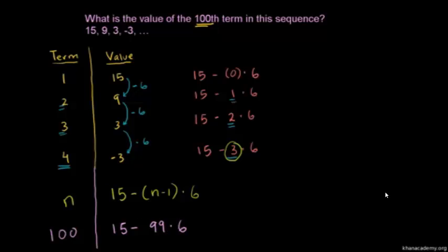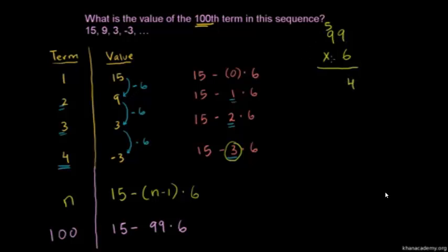So let's calculate what this is. What's 99 times 6? You could do this in your head — that's going to be 6 less than 100 times 6, which is 600, and 6 less is 594. Or the old-fashioned way: 6 times 9 is 54, carry the 5, 6 times 9 is 54, plus 5 is 594.